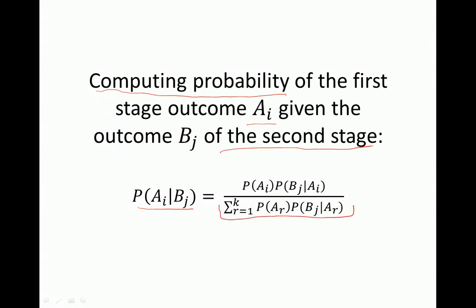In the numerator we have the probability of Ai times the conditional probability of Bj given Ai. And in the denominator we have a summation over all the first stage outcomes. So let's go on to the proof.